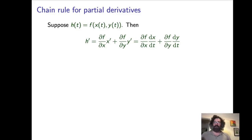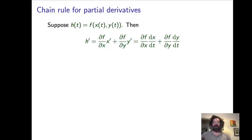The chain rule we apply for this case of composition of a function with more than one variable is: H prime, the derivative of H with respect to T, is given by the partial derivative of F with respect to X times the derivative of X with respect to T, plus the partial derivative of F with respect to Y times the derivative of Y with respect to T. This is also written out in Leibniz notation.